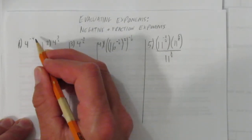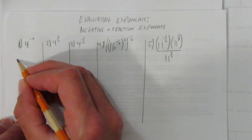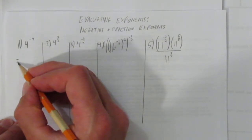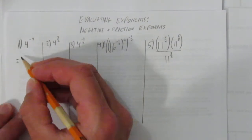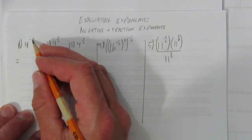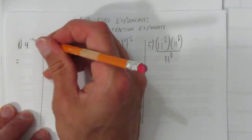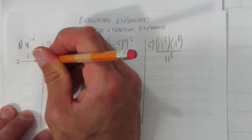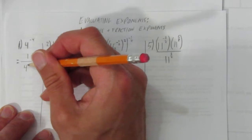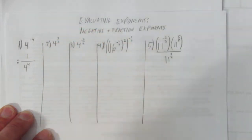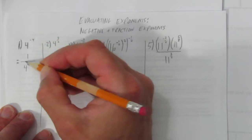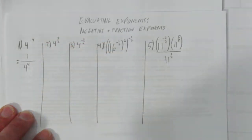Question 1 is just 4 to the power of negative 4. Here's the rule: when you have a negative exponent, it means this simple phrase — put me under the line, change my exponent sign. A negative exponent means put me under the fraction line, change my exponent sign.